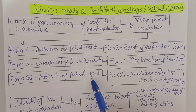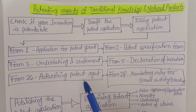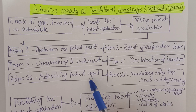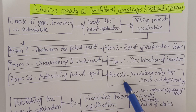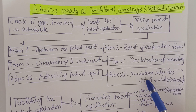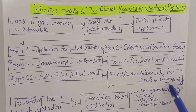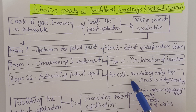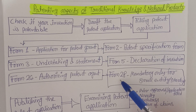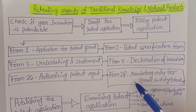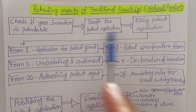Under the filing step, Form number 26 is for authorizing a patent agent — for example, the patent office in Calcutta, which is a government body. You have to fill in the details about the patent agent. Form number 28 is mandatory only for small entities or startups; it is not mandatory for others, only for small organizations.